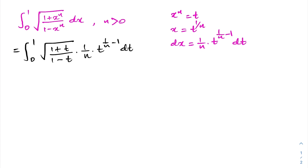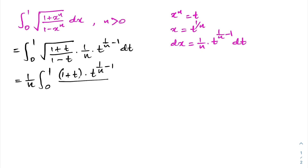Since 1 over n is a constant, we can write it outside the integral sign. So we have 1 over n times the integral from 0 to 1. Now, if we multiply both numerator and denominator by the square root of (1 plus t), in the numerator we have (1 plus t), and in the denominator we get the square root of (1 minus t squared), using the difference of two squares.